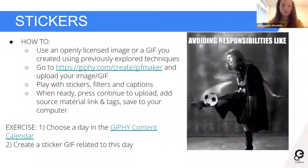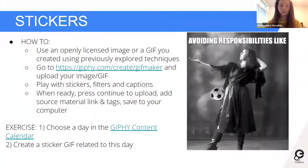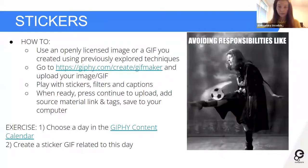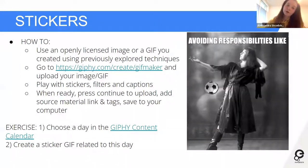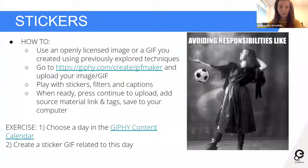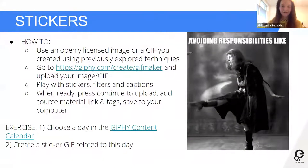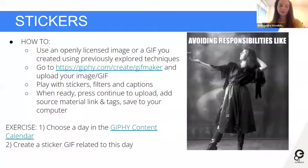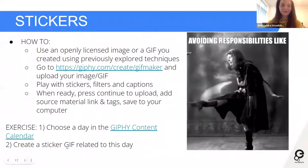This is done entirely on Giphy. The Giphy GIF maker tool lets you upload your image — there's also a place for the link of the source, which is great, because you should always credit the source even if the image is open. You can play with stickers, filters, and captions to see what you can do. When you're ready, press continue, upload, and save the work on your computer, then upload to GIF It Up. Giphy also has a content calendar so you can create GIFs related to trending topics beyond the contest.